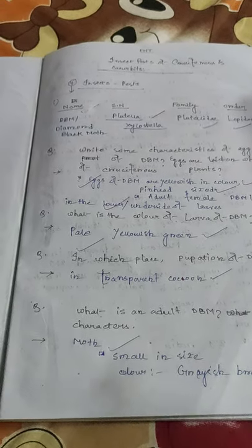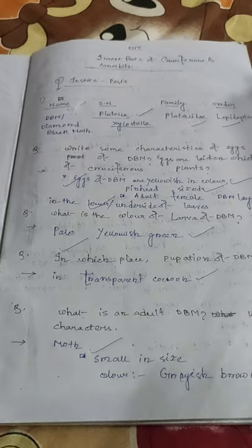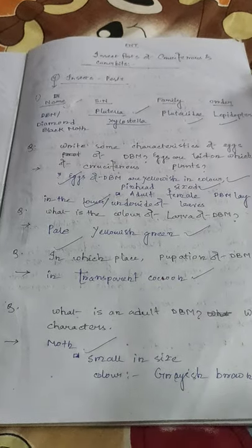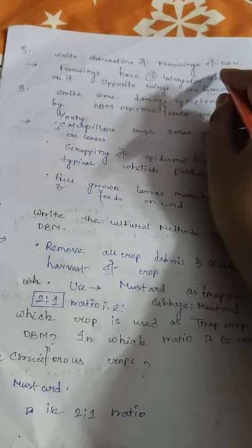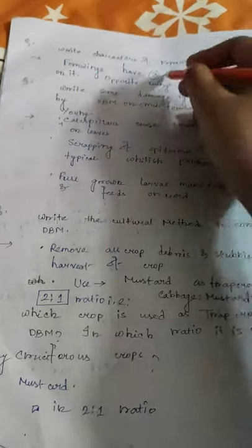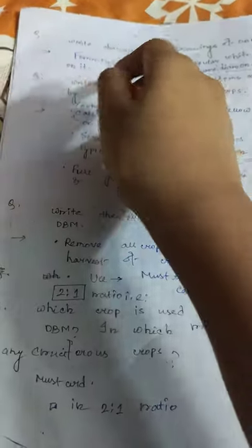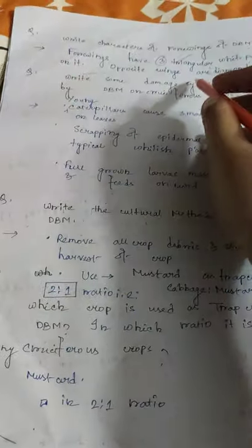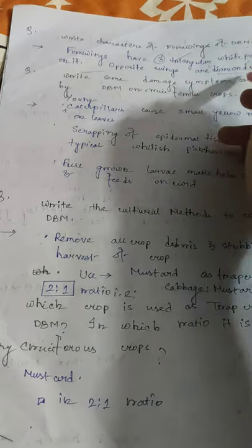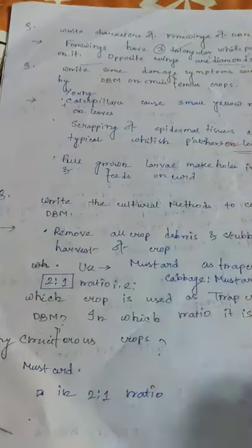The site of pupation of Diamond Black Moth is the transparent cocoon. The four wings of DBM have three triangular white patches, and the opposite wings are diamond shaped.